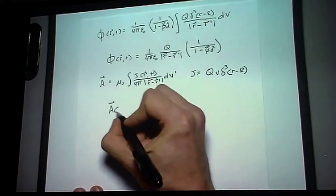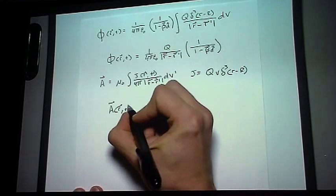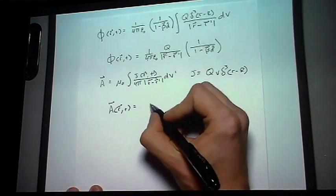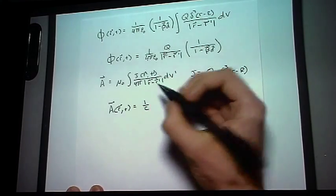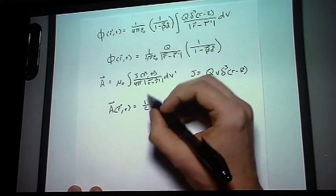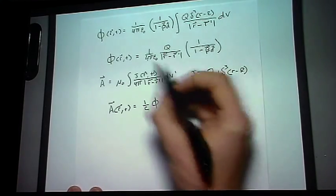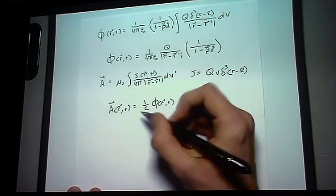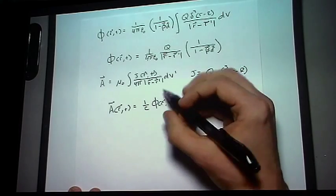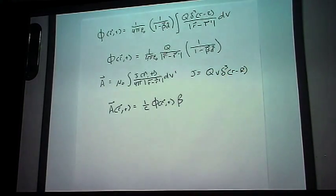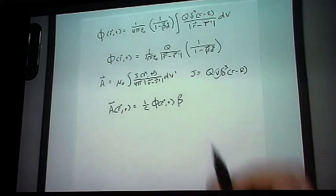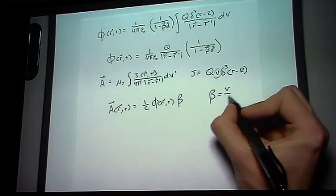then our final answer comes out as being something easy to work with, which is A of R and T is equal to 1 over C, which is the speed of light, times your scalar potential. Rather than rewriting all this again, I'm just going to put in the scalar potential, and with an extra factor of beta. And that all comes out from the relationship between C and mu naught epsilon naught, as well as the presence of a V here, because we said that beta is equal to V over C.